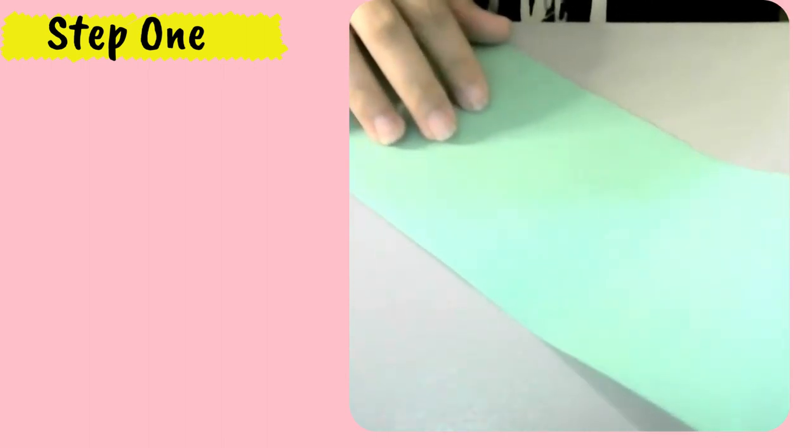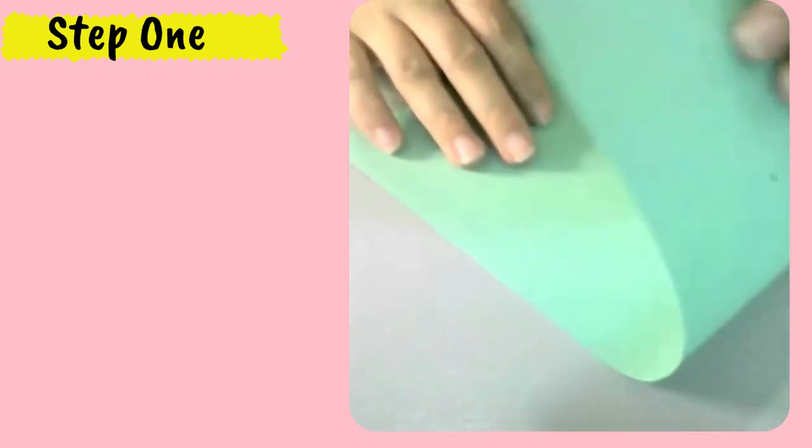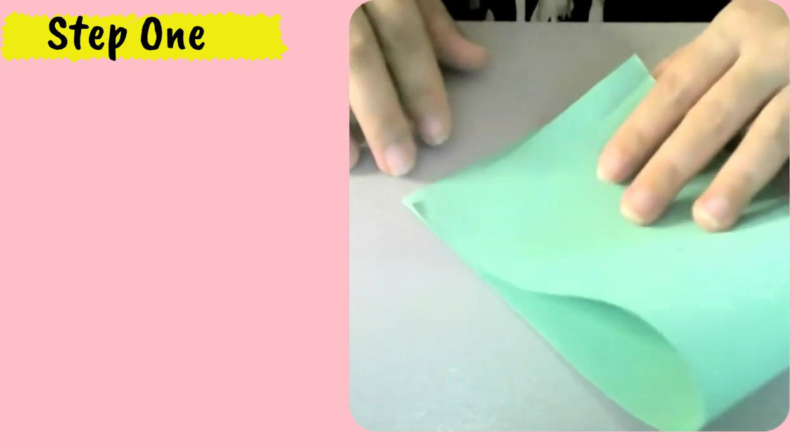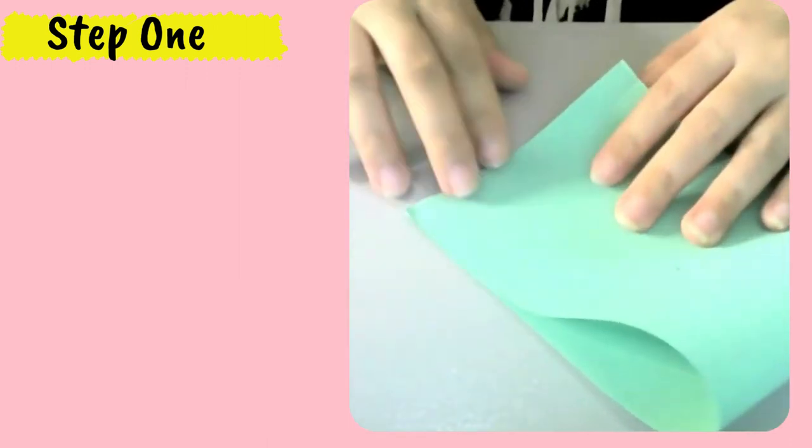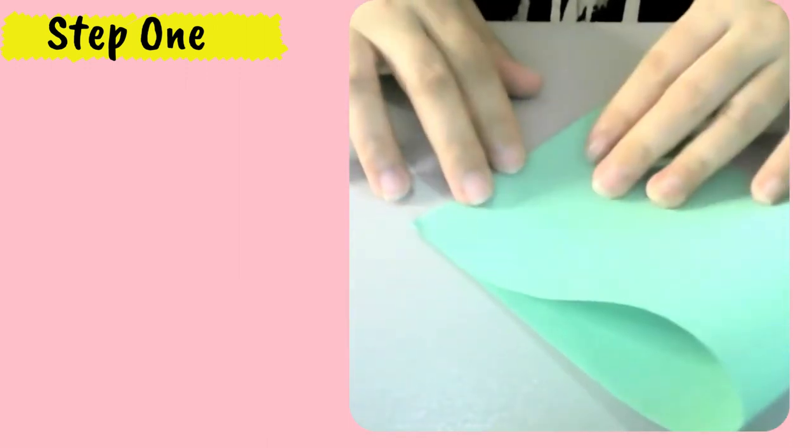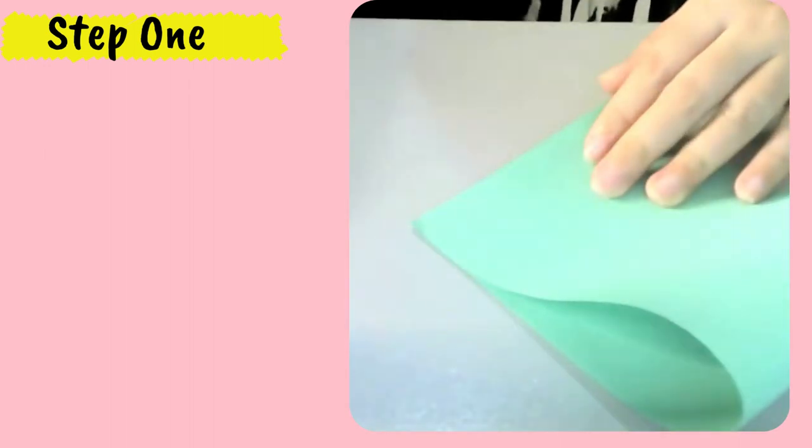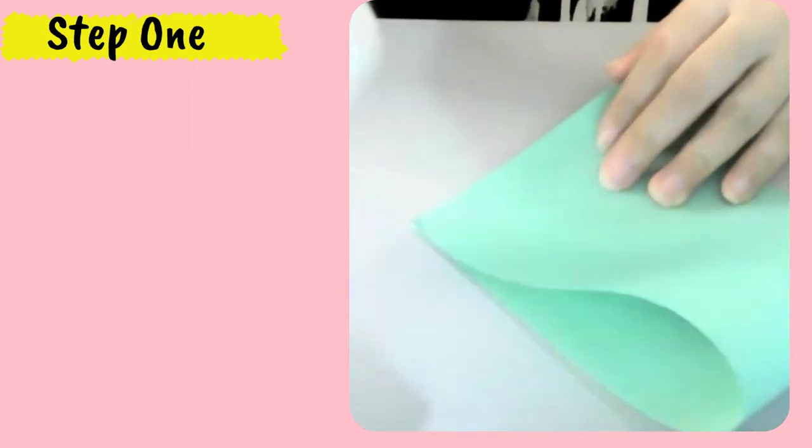First step, glue the two ends of the main body straight together and staple on both sides. So if you don't have a stapler, you can use glue. Since I don't have a stapler, I will be using glue.